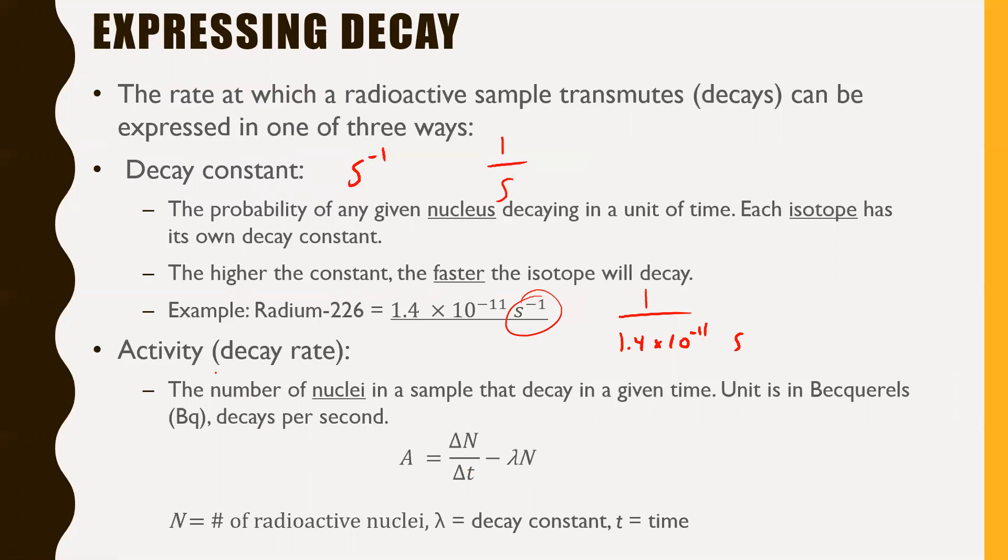Another one is called the activity, also known as a decay rate. The number of nuclei in a sample that decay in a given unit of time, that's what the activity is. The unit is in this weird unit called Becquerels, or BQ, which really just means the number of decays per second. I don't believe you'll need this formula, but you might. Activity is the change in the number of radioactive nuclei divided by the change in time, which equals the decay constant times the number of radioactive nuclei. It is quite an excessive formula. It is measured in Becquerels, which is the number of decays per second.